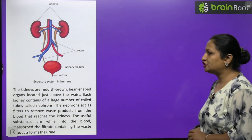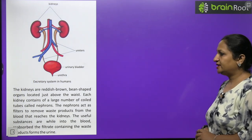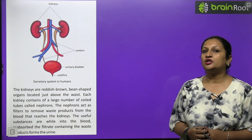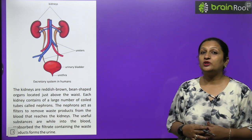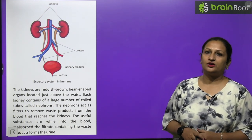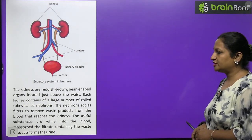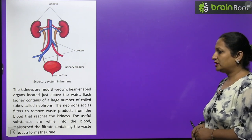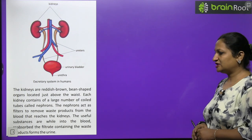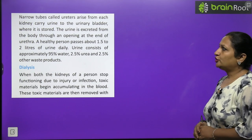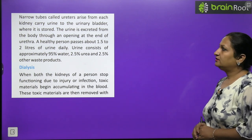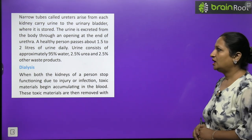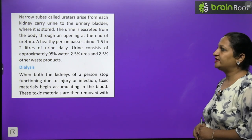The kidneys are reddish-brown bean-shaped organs located just above the waist. Each kidney contains a large number of coiled tubes called nephrons — the structural and functional units of the kidney — which purify blood. Nephrons act as filters to remove waste products from blood; useful substances are reabsorbed into the blood, and the filtrate containing waste forms urine. Narrow tubes called ureters arise from each kidney and carry urine to the urinary bladder. The urine is excreted through an opening at the end of the urethra. A healthy person passes about 1.5 to 2 litres of urine daily.